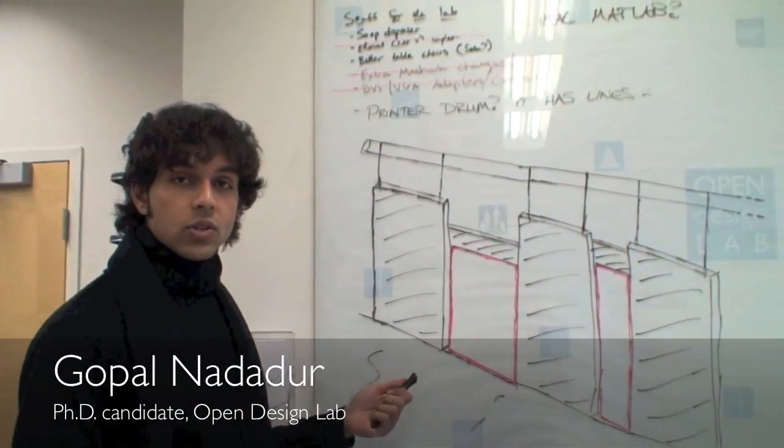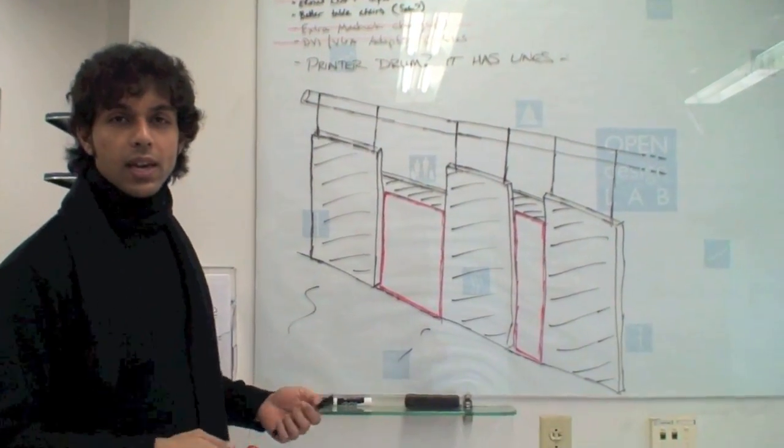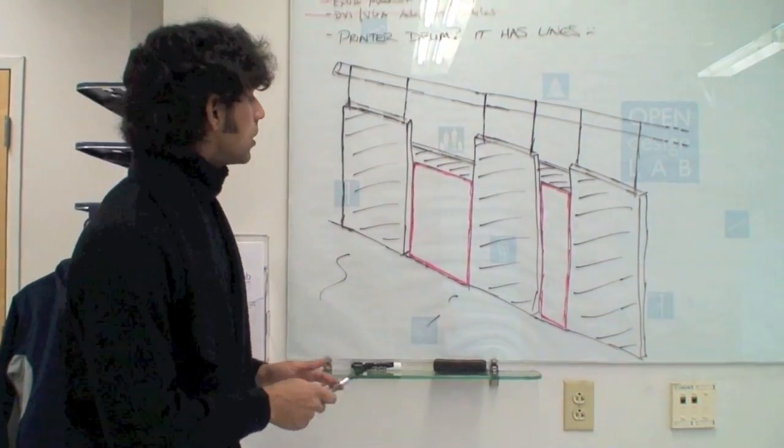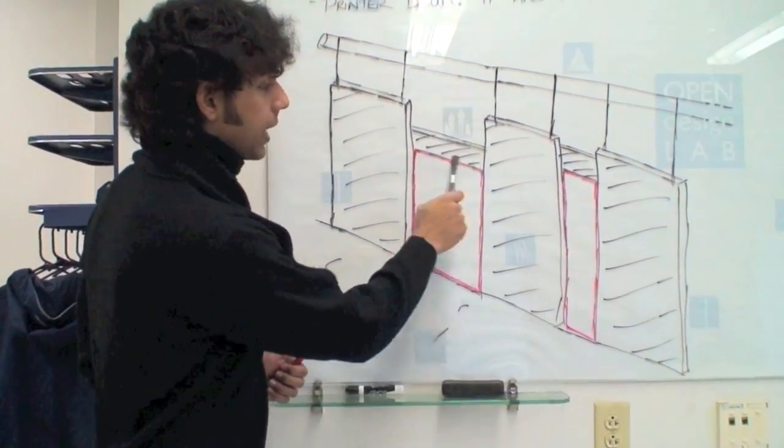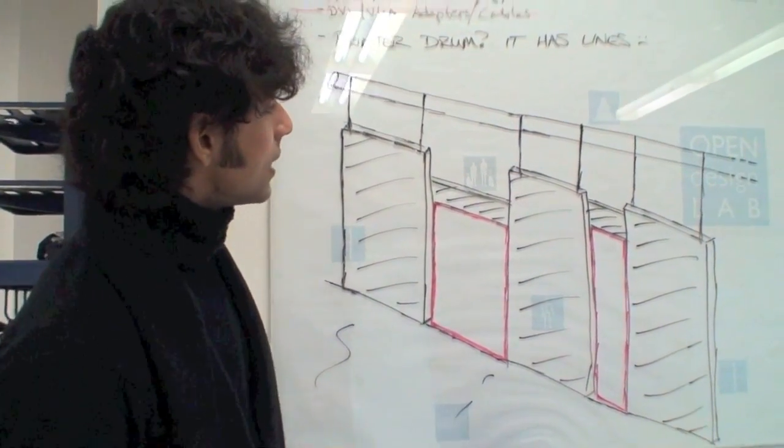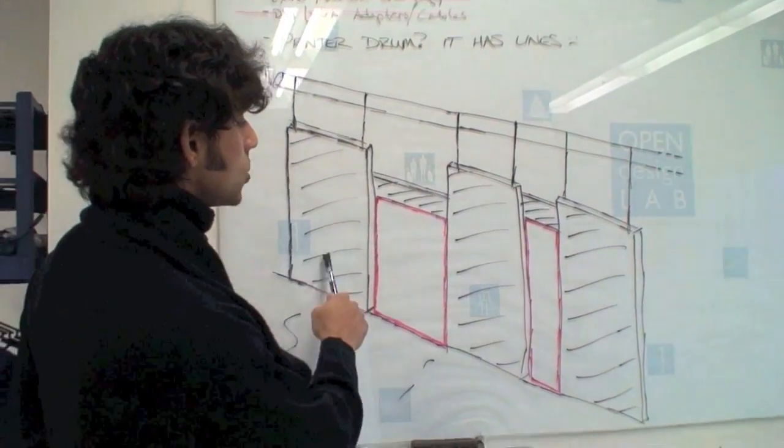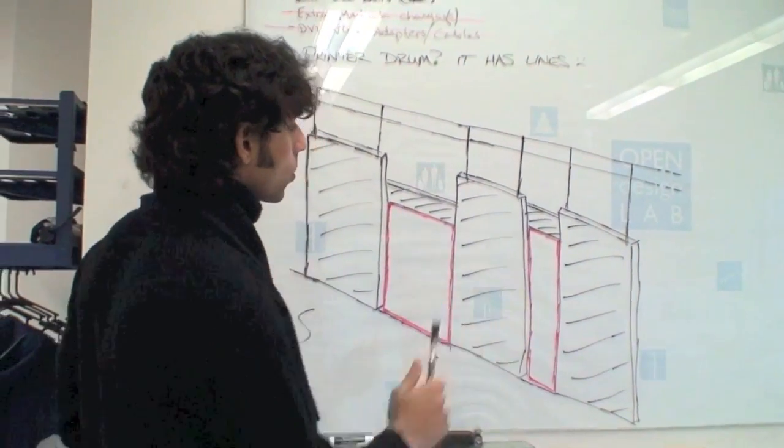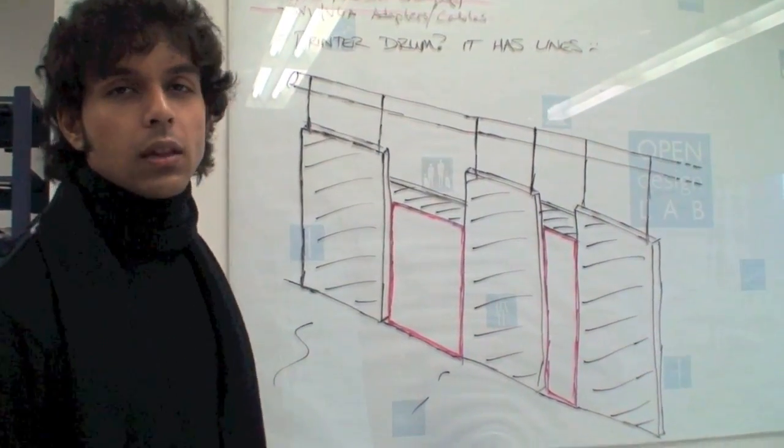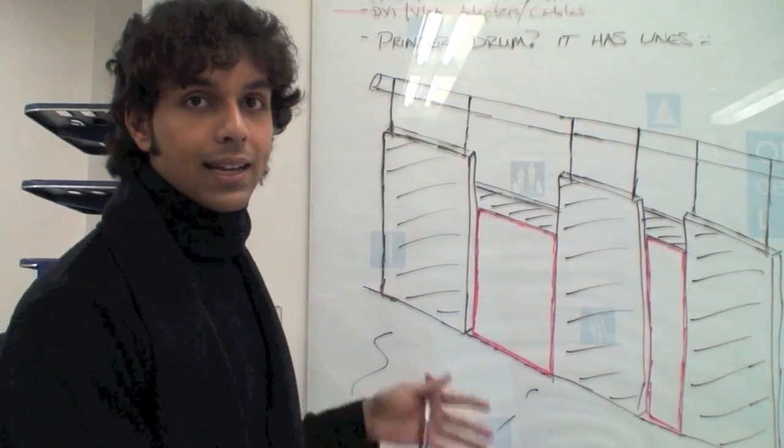Here we've drawn a simple sketch of the doorway experiment as we envision it. The actual doorways are outlined in red. We think it would be best to have sections of walls between the different doorways, and we're going to be using large chunks of styrofoam to act as the walls.